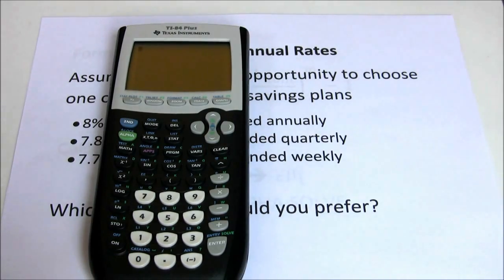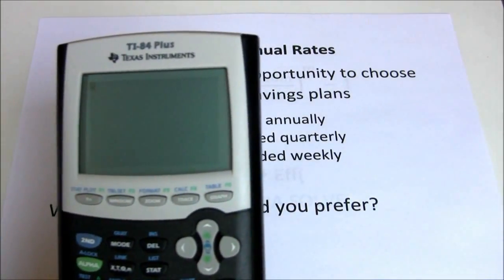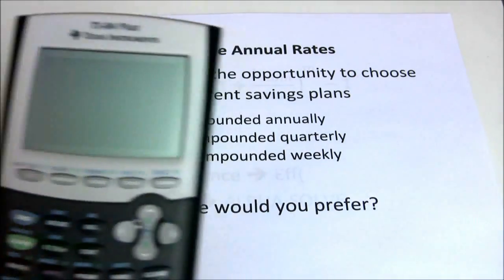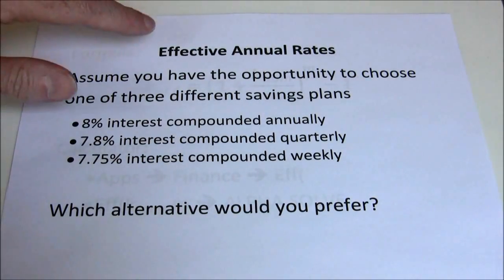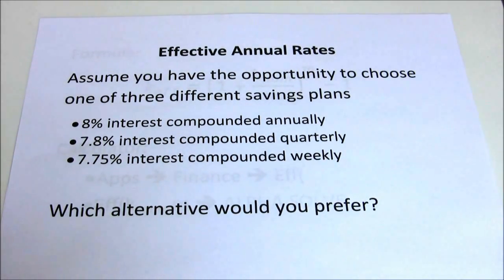In this video we're going to be using the Texas Instruments 83 or 84 plus financial calculator to look at a concept called effective annual rates. The idea of effective annual rates is sometimes we're offered investments that have different compounding periods.